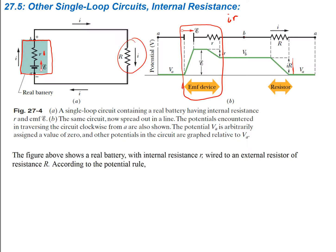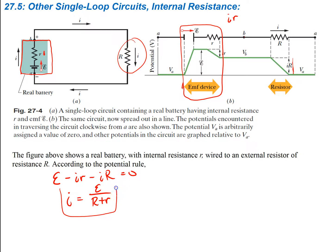The figure above shows a real battery with internal resistance little r, wired to an external resistor of resistance R. According to the potential rule, you have positive epsilon, minus the internal resistance term I·r, minus the big resistor term I·R, and that equals zero. Solving for current, it's going to be the EMF divided by the sum of the two resistors — EMF divided by big R plus little r. This was for a real EMF device.